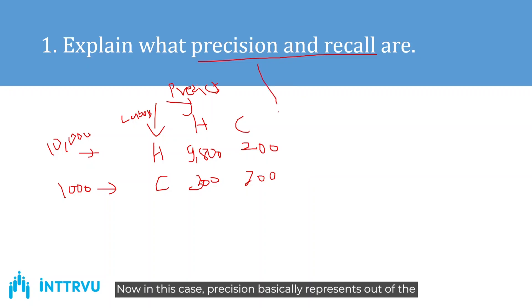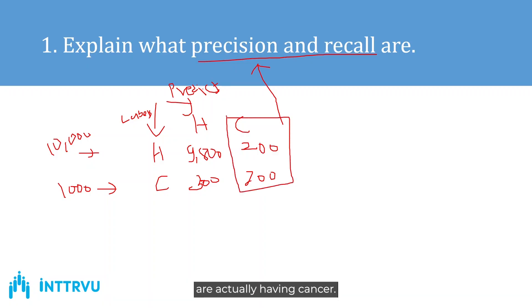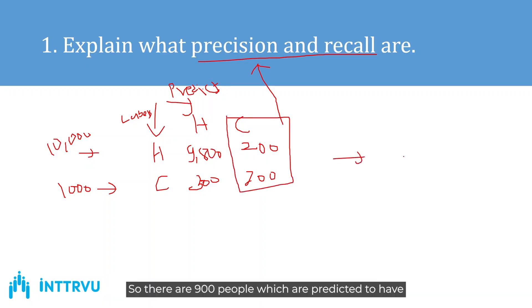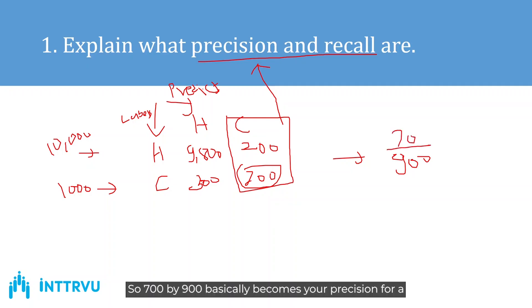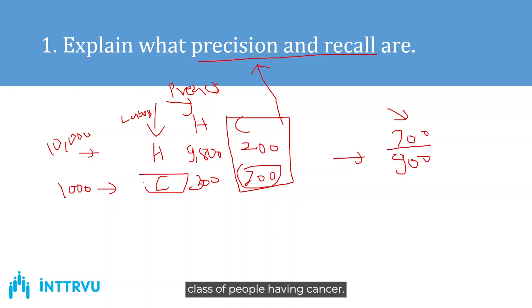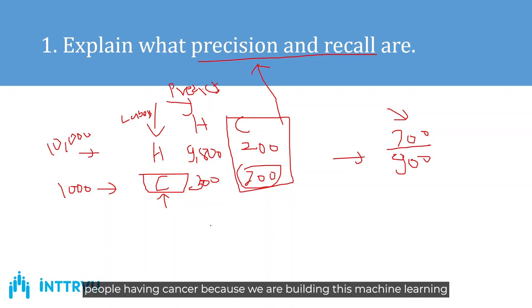Precision represents: out of the people predicted to have cancer, how many actually have cancer. There are 900 people predicted to have cancer, and out of those 900, only 700 actually have cancer. So 700 divided by 900 is your precision for the cancer class, which is the important class since we are building this model to predict whether people have cancer.